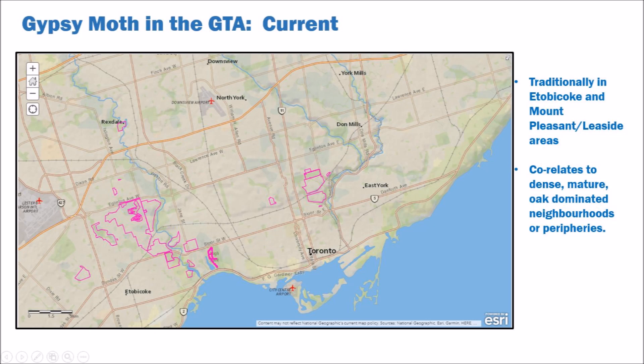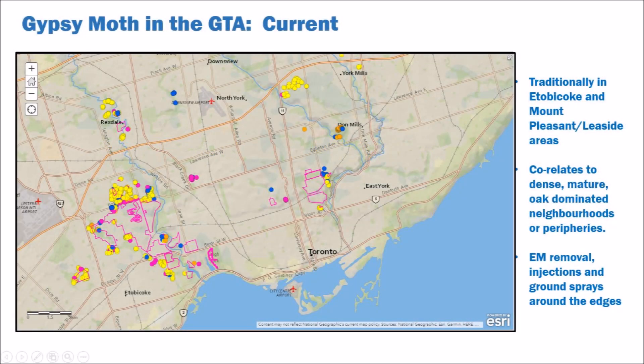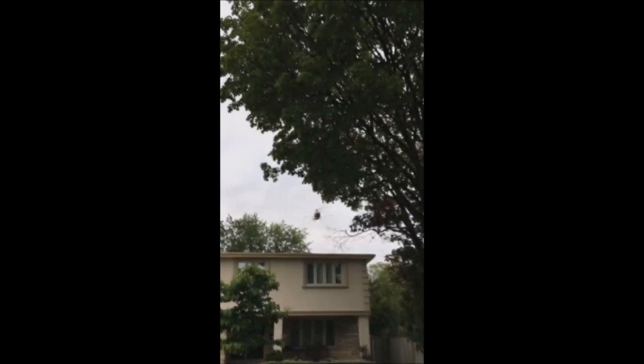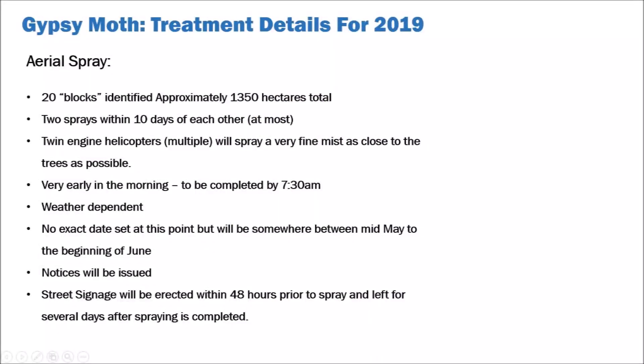A more detailed version of this map is available on our website at www.toronto.ca/gypsymoth. Outside of the spray zones we will be implementing several other control options including egg mass removal, injections and ground spraying, as well as notifying homeowners of private trees with issues. Currently we have 20 blocks identified for spraying, approximately 1,350 hectares, which is the largest spray Toronto has ever done. Two spray applications will be applied by a helicopter to each of these blocks within 10 days of each other. Two twin engine helicopters will be used to apply a very fine mist as close to the tree canopy as possible.